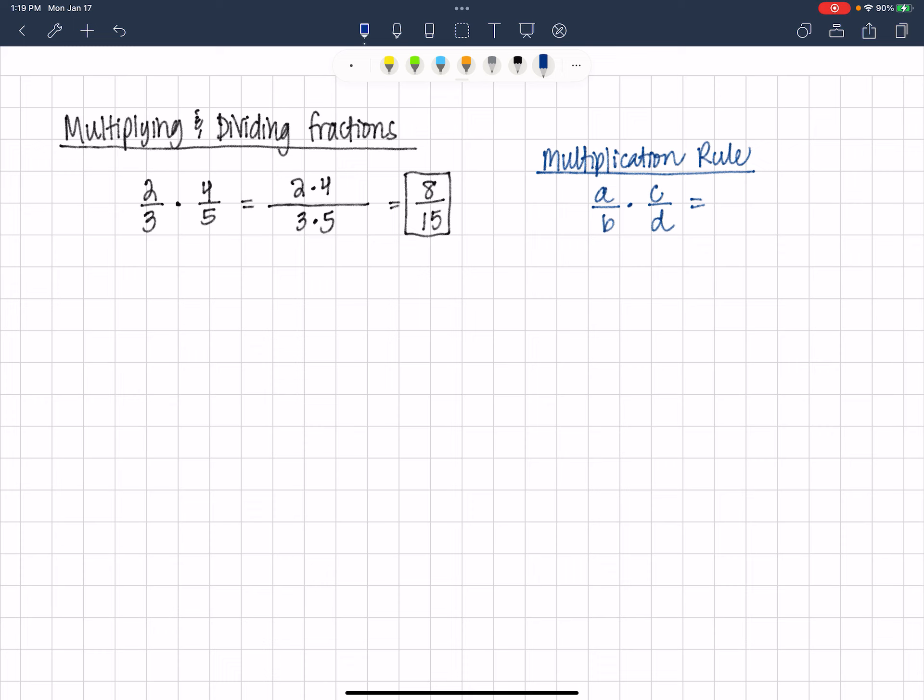And this is just something that you just have to practice, so rote practice, doing maybe 10 of these problems and you'll get the hang of it. A over B times C over D is the same thing as AC over BD, which is A times C over B times D.